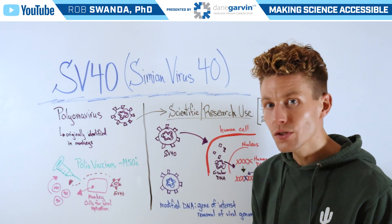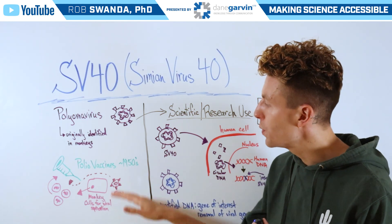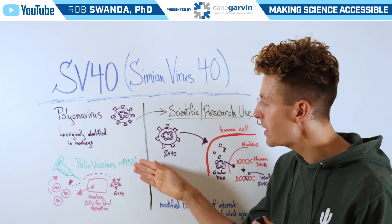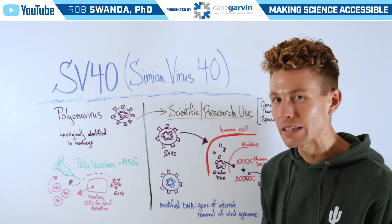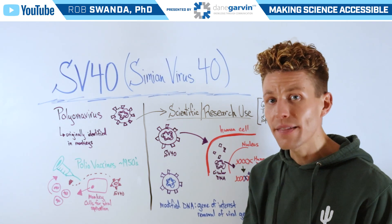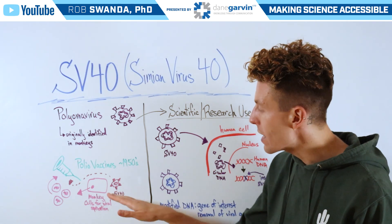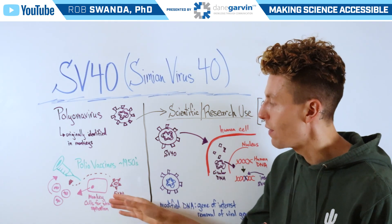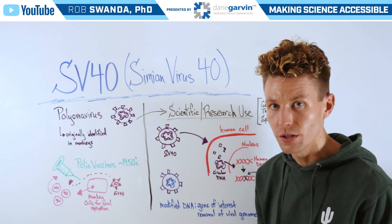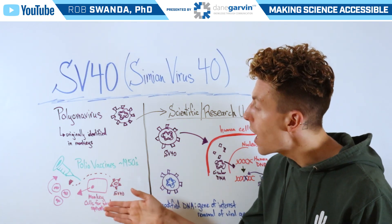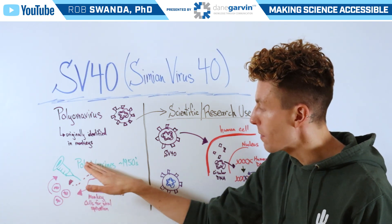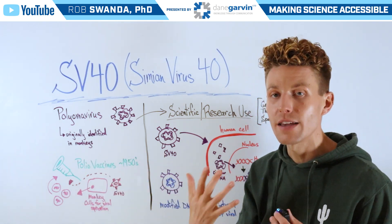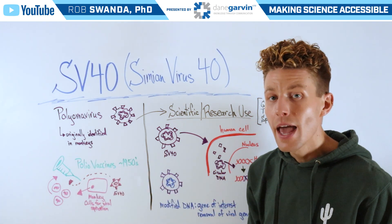It has a controversial history due to its contamination of polio vaccines in the 1950s. That's because at the time, manufacturers were using monkey cells for viral replication to grow a weakened form of the polio virus to then use as a vaccine.